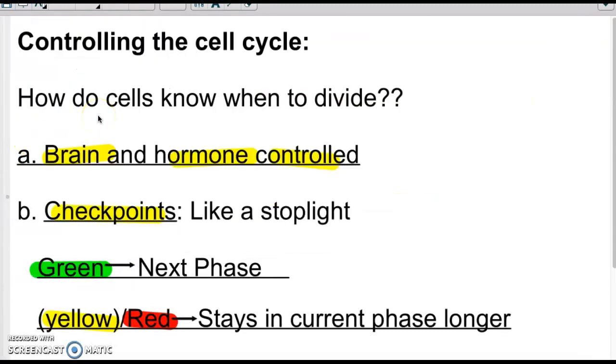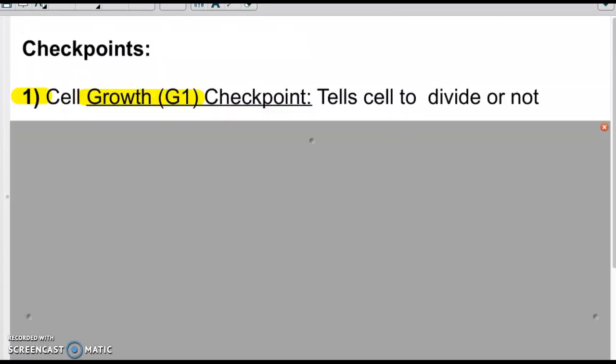So there's these checkpoints. I want you to kind of think of the cell cycle having these checkpoints. They're all controlled by the brain and hormones and these proteins. So you think that we get to a checkpoint and you have a stoplight. Your body is going to determine if it's green. Yep, it's going to move on to the next phase of the cell cycle. If it's red or yellow, it's going to be saying, nope, pause, stay in this current phase. You're not ready to move on yet. Or it might mean you aren't going to be ready at all and we need to go through apoptosis because you're not a good functioning cell.